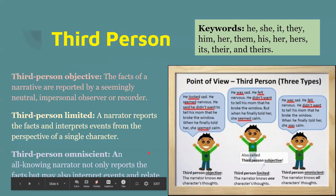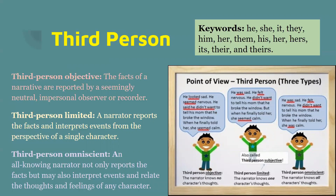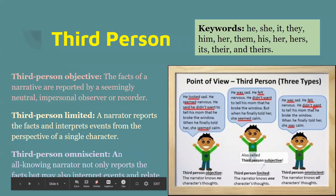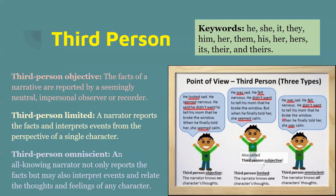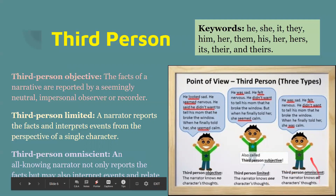Then we have third person omniscient. An all-knowing narrator not only reports the facts, but may also interpret events and relate the thoughts and feelings of any character. So: 'He was sad. He felt nervous. He didn't want to tell his mom.' We know all those are true. But then, when he finally told her, she was calm — so we know both characters' thoughts. We know for sure that she was calm because the narrator told us. The narrator knows all of the characters' thoughts.